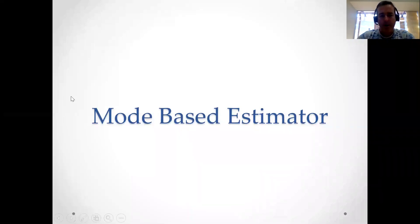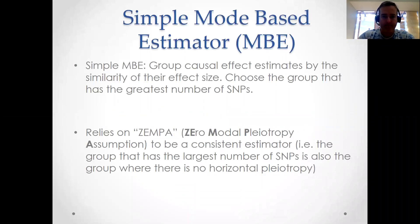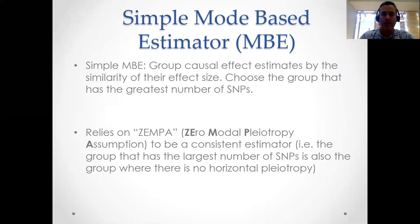The third pleiotropy-robust estimator we'll talk about is the mode-based estimator. We'll start by discussing a version called the simple mode-based estimator in order to build some intuition. The idea is that we've got a whole lot of different estimates of the causal effect, one for each SNP in our Mendelian randomization analysis.